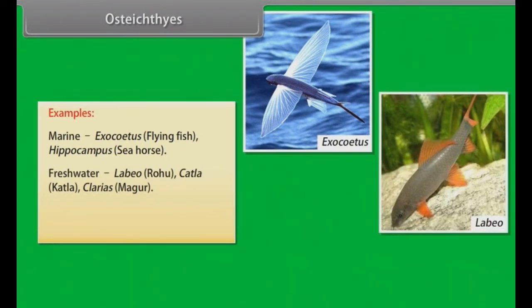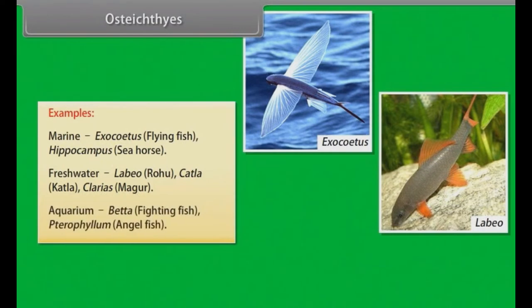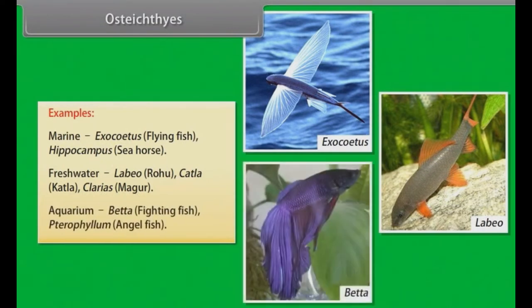Examples — Marine: Exocoetus (Flying Fish), Hippocampus (Sea Horse). Freshwater: Labeo (Rohu), Catla. Aquarium: Betta (Fighting Fish), Pterophyllum (Angel Fish). Clarias (Magur).